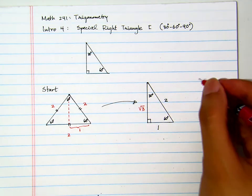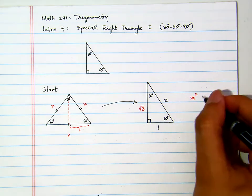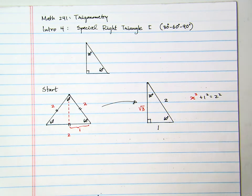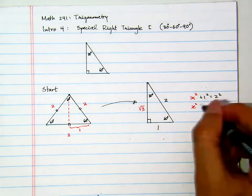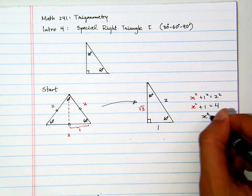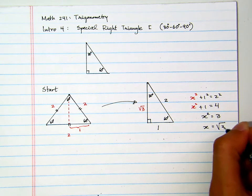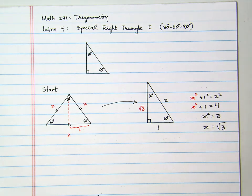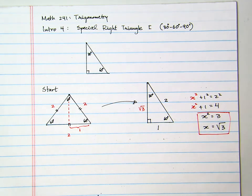By the Pythagorean theorem, we see that the missing side will be radical three. Let's call that side x. Then x squared plus one squared equals two squared. So x squared plus one equals four. Therefore x squared equals three, and x equals the square root of three. That's how we get that value.